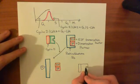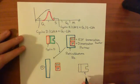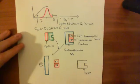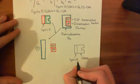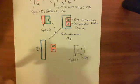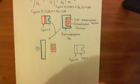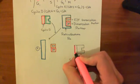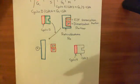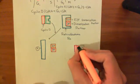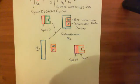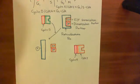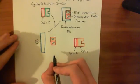Here's cyclin E bound to CDK2, the cyclin-dependent kinase 2 protein. This cyclin E CDK2 complex is involved in the G1/S transition because it spikes at that point. What it does is phosphorylate and inactivate another tumour suppressor protein called P27.